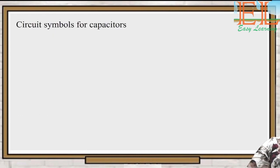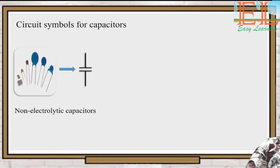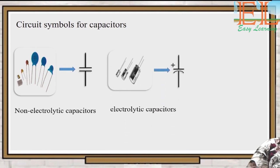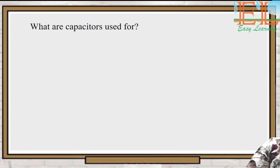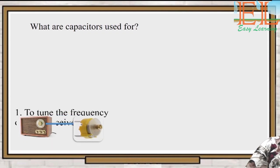How do capacitors look in a circuit? The non-electrolytic capacitor looks like you see on your screen. The electrolytic capacitor looks like what you see on your screen, and the variable capacitor also appears as shown on your screen.